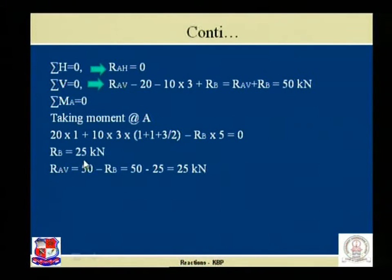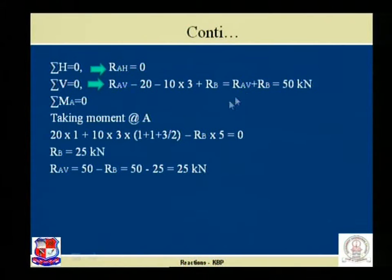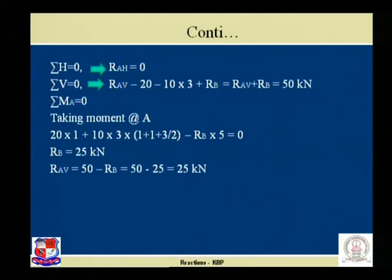Solving the moment equation, RB comes to be 25 kilo newton. Once we get RB equals 25 kilo newton, substituting into the first equation gives RAV equal to 50 minus 25, which equals 25 kilo newton. It is very easy to find the three unknowns using three equilibrium conditions. Let us proceed with the next numerical, problem number three.